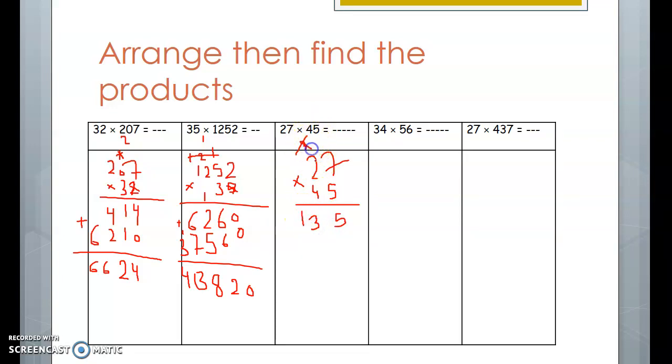Cross it. Start a new line with 0. 4 times 7, 28. 8 down, 2 up. 4 times 2, 8. And we carry 2, it's 10. Addition. 5, 8 plus 3, 11. 1 and 1. 2 and then 1.